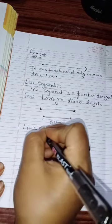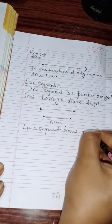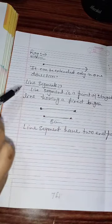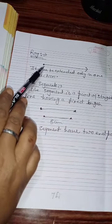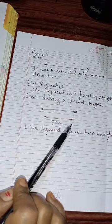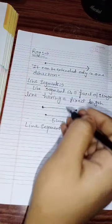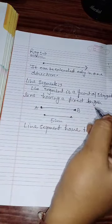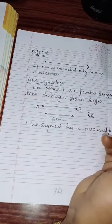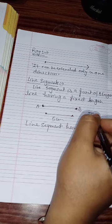The difference between a ray and a line segment: a ray has one fixed point and can be extended in one direction, while a line segment has two end points and cannot be extended. A line segment AB, where A and B are two end points, is denoted by writing AB with a bar over it.